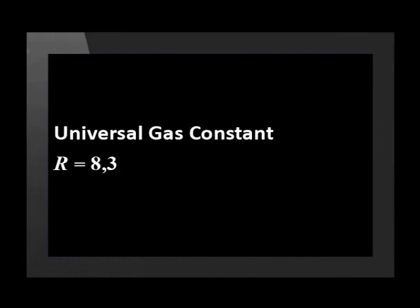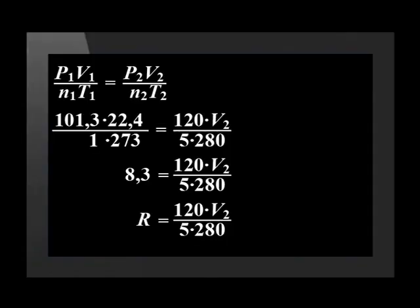Remember that the universal gas constant R in this equation has a value of 8.3. But what are the units of this constant? R's units affect the units we should use in the universal gas equation. So let's start with a reminder of how we calculated R in the other lesson. These are the values we substituted into the combined gas equation, which gave us 8.3 — in other words, R.